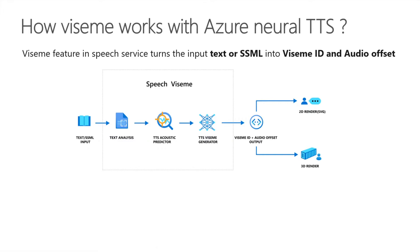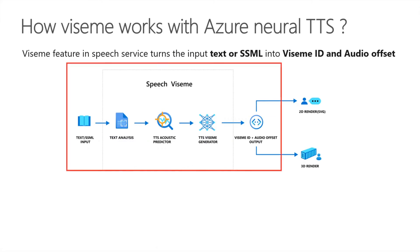A Viseme is the visual description of a phoneme in spoken language. It defines the position of the face and mouth when speaking a word. In the Viseme feature, the input text or SSML is converted into a set of Viseme IDs and Audio Offsets, which are used to represent the key poses in observed speech in time sequence, such as the position of the lips, jaw, and tongue.